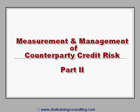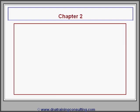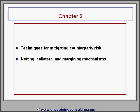We remind you that this Part 2 contains a single chapter, Chapter 2, which reviews and compares the common techniques for mitigating counterparty credit risk, including netting, collateral and margining mechanisms, and a number of contractual devices, such as recouponing and early termination clauses.